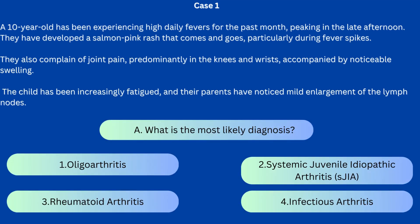Question number one: What is the most likely diagnosis? Options: 1. Oligoarthritis, 2. Systemic juvenile idiopathic arthritis, 3. Rheumatoid arthritis, 4. Infectious arthritis. The correct answer is 2 — systemic juvenile idiopathic arthritis — characterized by hallmark symptoms of daily high fever and salmon-colored rash, in addition to arthritis and joint swelling.